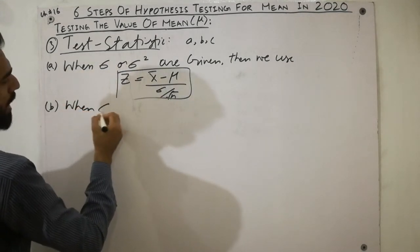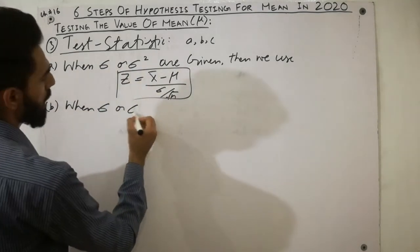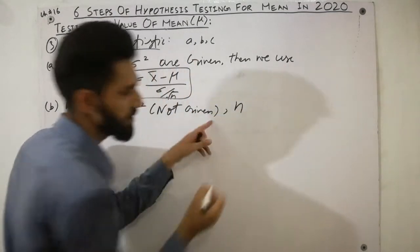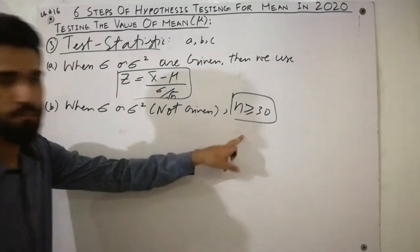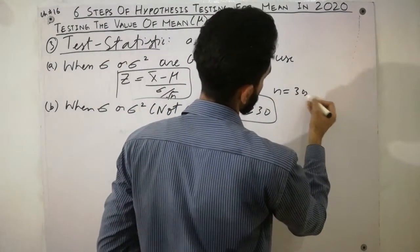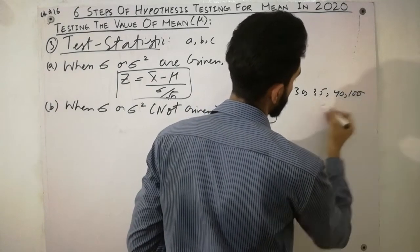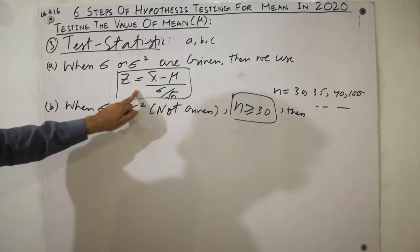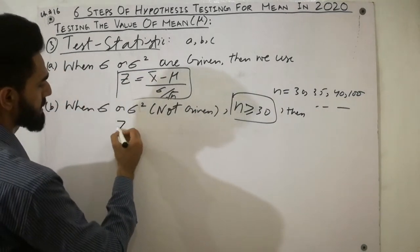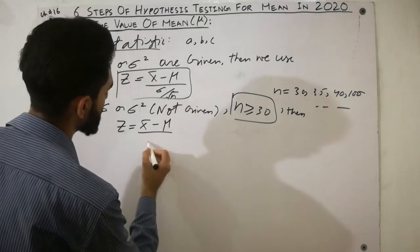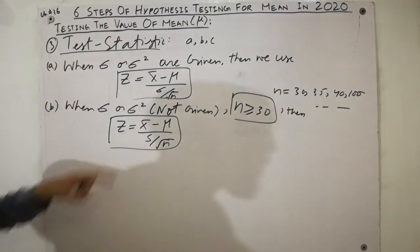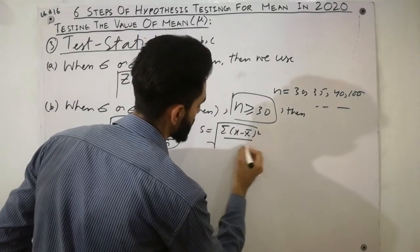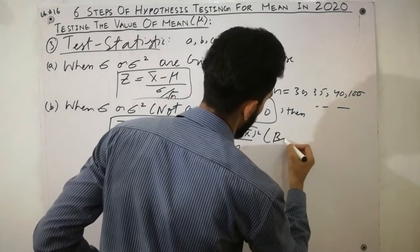Point B: when sigma or sigma-squared is not given, but the sample size is greater than or equal to 30 — for example 30, 35, 40, or 100 — then we change the formula to: Z equals x-bar minus mu, divided by s divided by the square root of n. Here s is the sample standard deviation, calculated as the square root of the summation of (x minus x-bar) squared divided by n, using the biased formula.